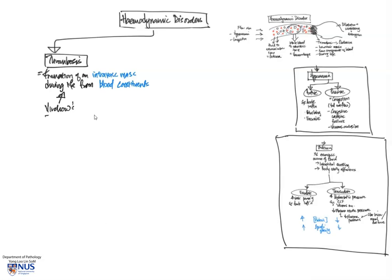There are three major predisposing factors to thrombosis, known collectively as Virchow's triad. They include endothelial injury. For example, very common conditions such as atherosclerosis can give rise to this.